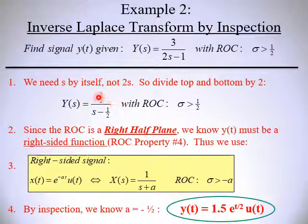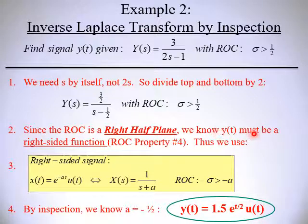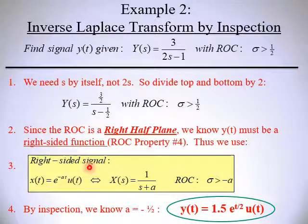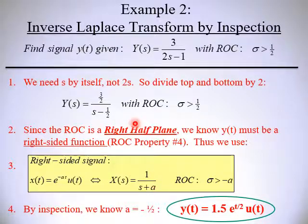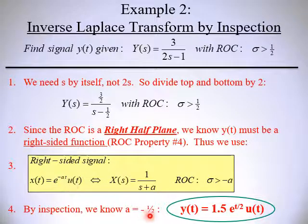Now we have Y(s) in a recognizable form. The region of convergence, sigma greater than one half, is a right half plane, so y(t) must be a right-sided function — ROC property number 4. Using the Laplace transform pair for a right-sided signal, by inspection we see s plus a in the denominator matches s minus one half, so a equals negative one half. With 3/2 out in front, and since e to the minus at with a equals negative one half gives e to the positive t over 2, our final result is y(t) equals three halves times e to the t over 2 times u(t).